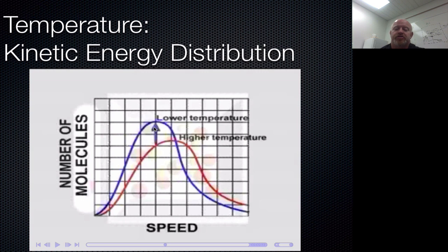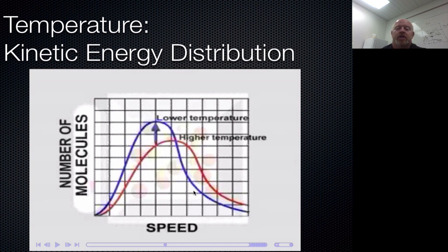As you get warmer, that peak shifts to the right because speed increases, so we have more energy. You'll also notice the curve dips down and flattens. The reason it flattens is that every particle can be moving as slowly as zero — not moving at all. As more and more particles move faster to the right, the peak can't stay as high because the left-hand side of the graph is always grounded at zero (absolute zero temperature). Some particles are always moving very, very slowly, and some are moving very fast.